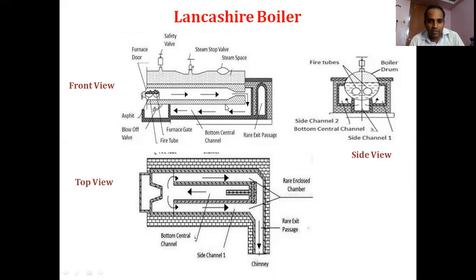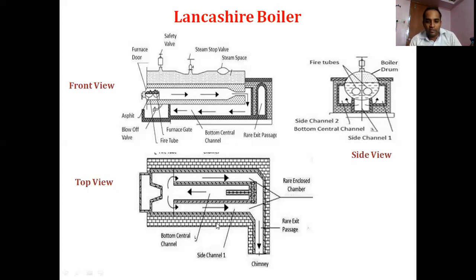The Lancaster boiler has the same parts studied in the Babcock & Wilcox boiler: a steam stop valve, safety valve, furnace door through which fuel is fed inside, ash pit for collection of ash, blow-off valve to remove mud particles from the water, furnace grate for combustion, one bottom channel and two side channels which control the flow of hot gases coming out of the two tubes, and a rear exit passage leading to the chimney.